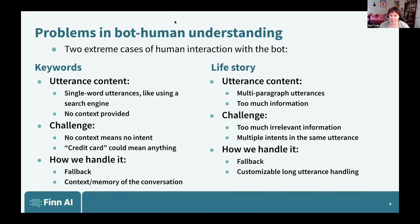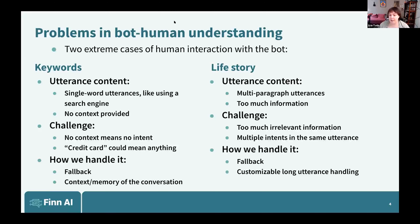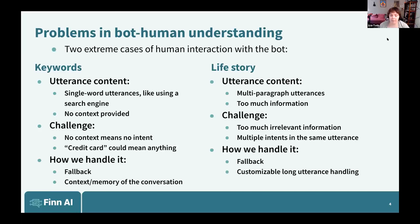In terms of how we handle it, we have to mitigate the situation. We have a system called fallback, which we'll get into in more detail later. For the keyword problem where we're missing context — single word utterances or someone speaking in what we'd consider entities — we use something called context, or memory of the conversation, to help us. For the long utterance problem with many intents, we have long utterance handling: if the bot recognizes someone's asking something too long, we can prompt them to shorten it and help them get to a human who might be able to help more completely.